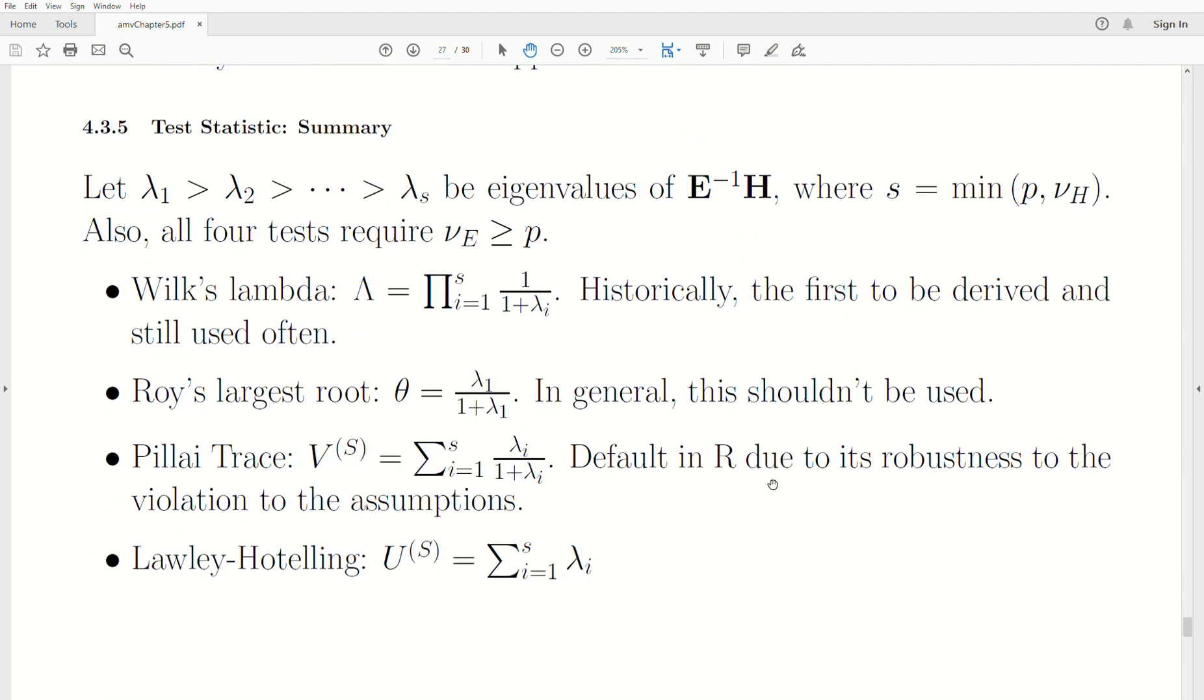So, as a brief summary is this. We have the eigenvalues ordered of this matrix product, inverse of the error matrix times the hypothesis matrix, which we did in part one. The Wilks Lambda is the product of this fraction, these eigenvalues. Roy's largest is just using the lambda one, the largest eigenvalue. And, in general, this shouldn't be used because it ends up not being very powerful, except in the specific case that they all lie in the same dimension or the same direction.